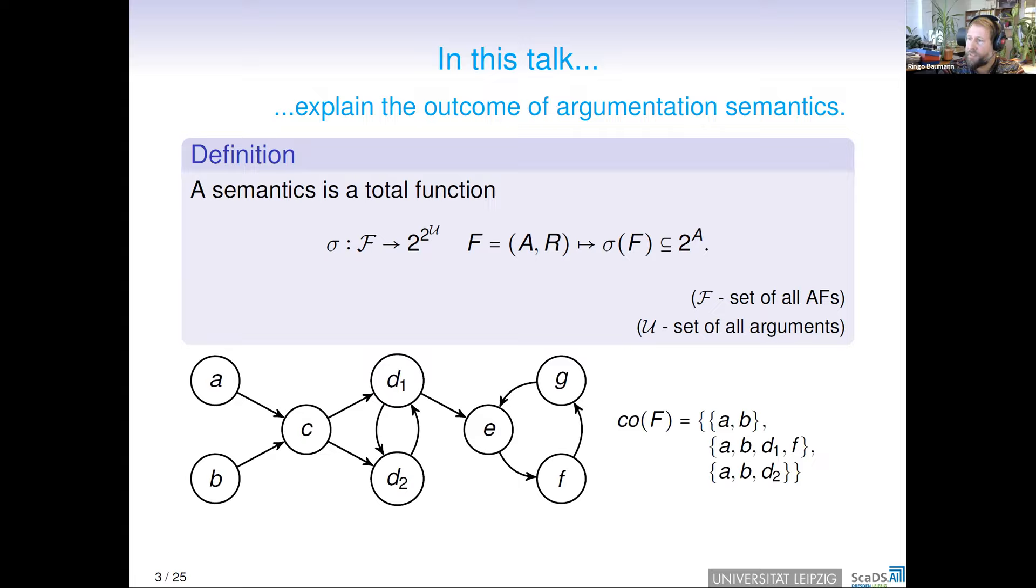Let's have an example. We see here a directed graph, an argumentation framework containing eight arguments A, B, C, D1, and so on. A attacks C, B attacks C, C attacks D1, and so on. One very prominent semantics is so-called complete semantics, and it returns complete extensions. Here on the right-hand side, you see the output, three complete extensions: A, B; A, B, D1, F; and A, B, D2.